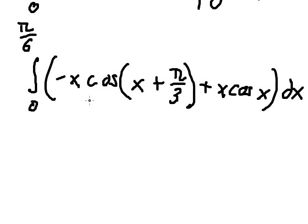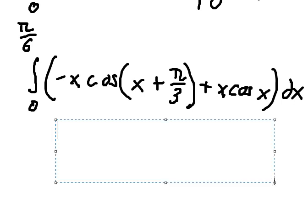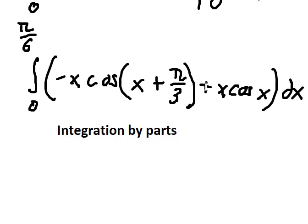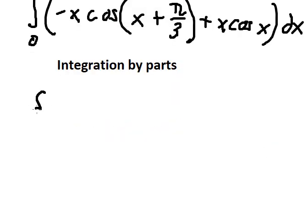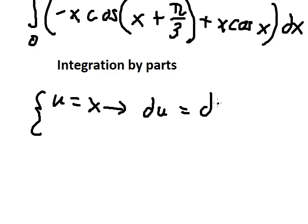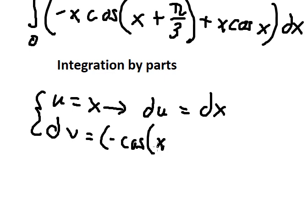Now we can use integration by parts. I will put u equals to x. We need to do the derivative first for the positive sign. dv is about negative cosine of x plus π/3 and cosine x.